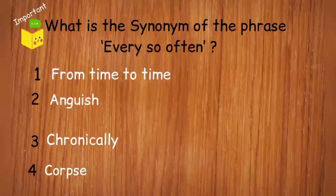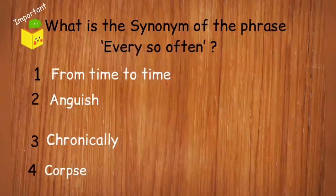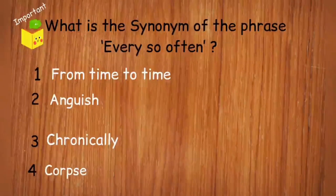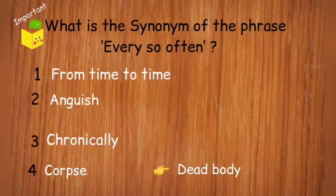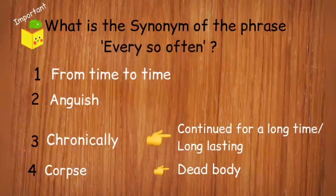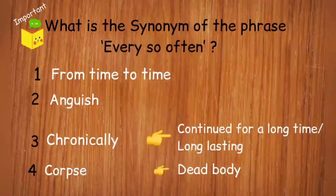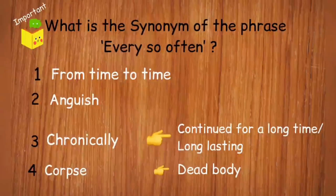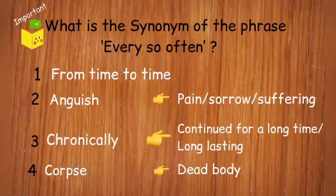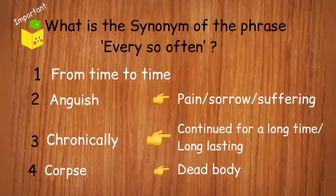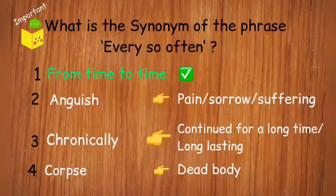What is the synonym of the phrase 'every so often'? The options are: 'from time to time', 'wish', 'chronically', or 'corpse'. A corpse is a dead body; chronically means continued for a long time; anguish means severe mental or physical pain and suffering; 'from time to time' means occasionally or at an interval. The synonym of 'every so often' is 'from time to time'. The correct answer is option one.